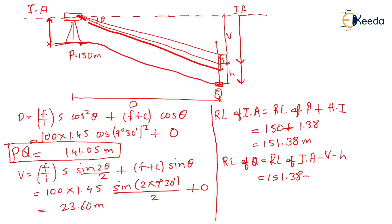V is already calculated, 23.60 meters. h is nothing but your middle reading, so middle reading was 1.930, and the answer is 125.85 meters. So likewise we have calculated the horizontal distance as well as RL of Q.